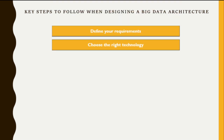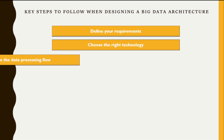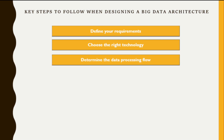Then you need to choose the right technologies — what we call the benchmark. This means choosing the right technology for each layer of the architecture based on the project requirements, considering factors such as scalability, performance, and cost. Then determine the data processing flow, meaning how the data will flow through the architecture from data ingestion to storage, processing, and analysis.